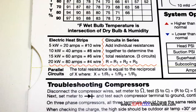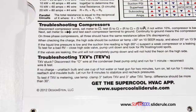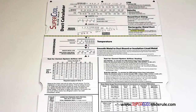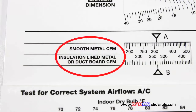It includes an electric heat strip guide, a complete system troubleshooting diagnostic chart, and how to troubleshoot compressors and TXV. Inside is packed with even more information, including sizing of both metal and flexible duct. It has the only direct reading conversion from smooth metal to insulated liner metal we've ever seen.